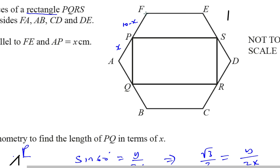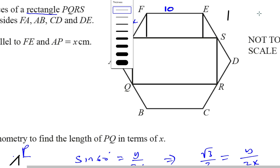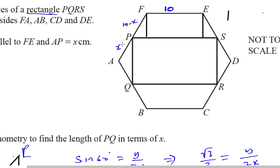I'm going to draw a line from here to here and from here to here. I know that this length is 10 because it's a regular hexagon, so all sides — FE, AF, AB, DC — are all the same. The parts on each end of the middle section of 10 are equal by symmetry; let's call each one Z. So I need to find what this length Z is.